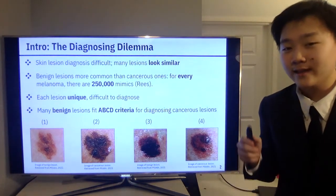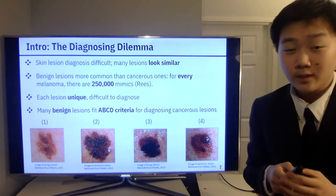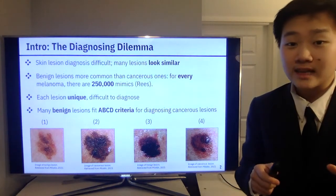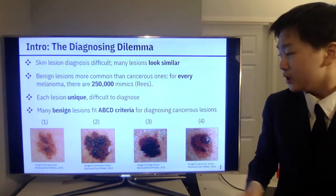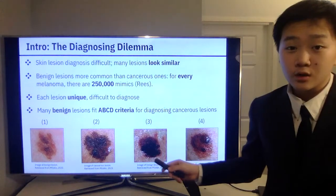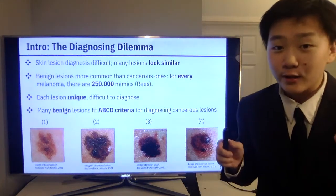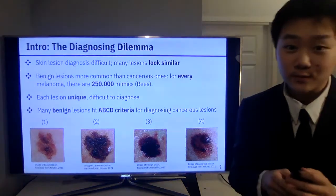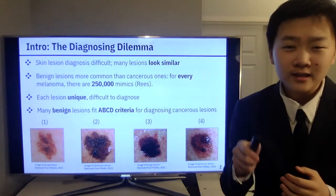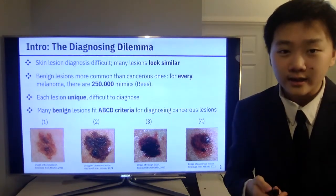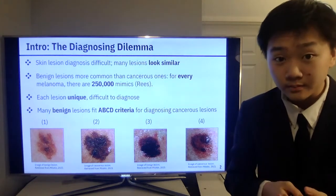And now we have a little exercise. Out of these four images of lesions, I want you to guess which two of them are cancerous. The correct answer was lesion 2 and lesion 4. If you got that correct, you must either be an expert in dermatology or really lucky. But if you didn't, you'll start to notice how difficult it is to diagnose skin lesions and why there is a problem.